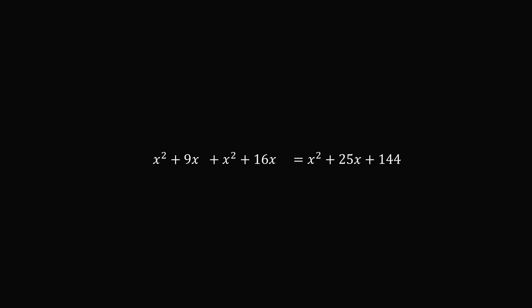So we just need to simplify this equation. Now we have an x squared on the left-hand side, which cancels out with the x squared on the right-hand side. 9x plus 16x is equal to 25x. So this exactly cancels out with the 25x on the right-hand side. And we're left with x squared is equal to 144.